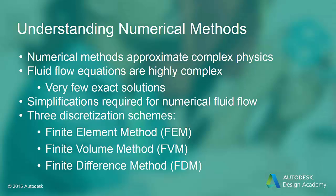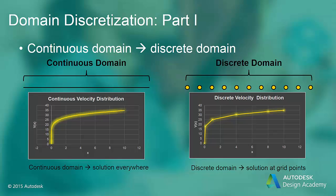Finite element analysis is widely used for structural analysis, but can also be used for CFD. For numerical analysis, the continuous problem domain is decomposed into a discrete set of points called grid points. The numerical analysis will provide a solution at each of these grid points. Whereas in the continuous domain the solution is known everywhere, in the discrete domain the solution is known only at the grid points. For the solution between grid points, interpolation is used.